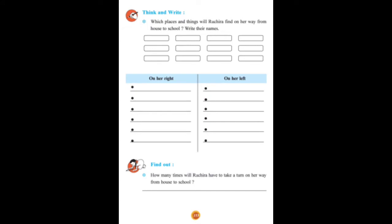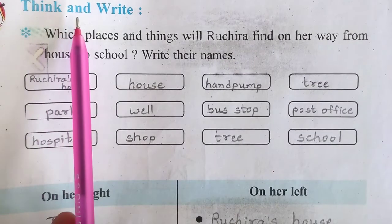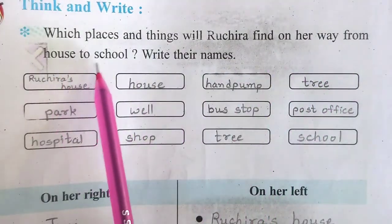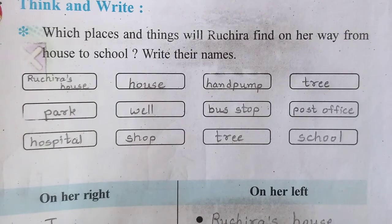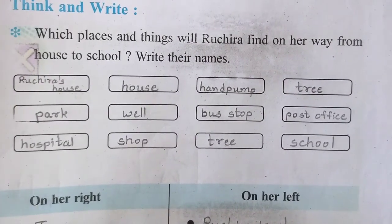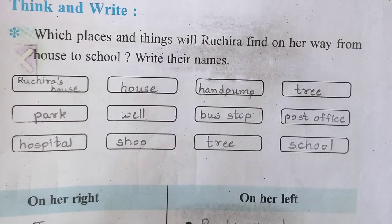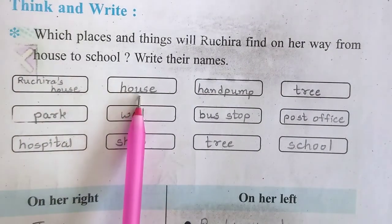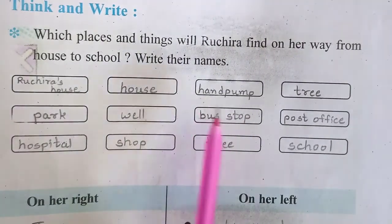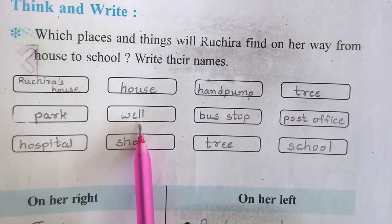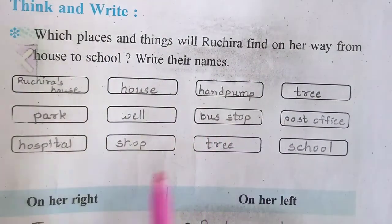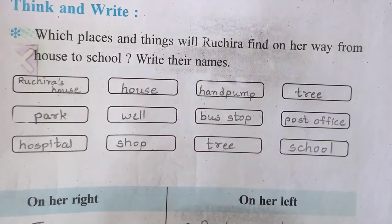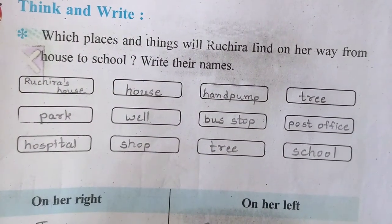Now let's go to the next page. See on page number 152, think and write: which places and things will Ruchira find on her way from house to school? Write their names. So, Ruchira is starting from her house. Then: house, hand pump, tree, park, well, bus stop, post office, hospital, shop, tree, and school. All these places she is finding on her way to school.